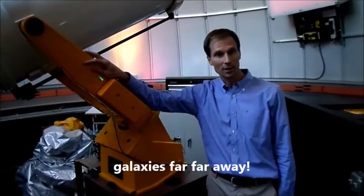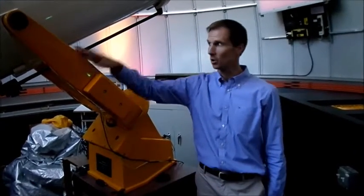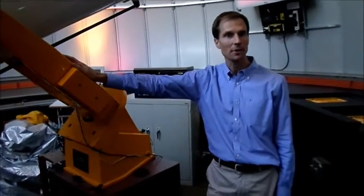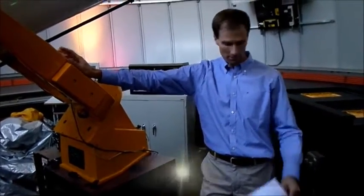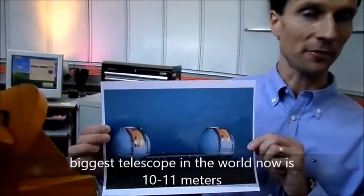How do we build a large telescope that allows us to see these extremely faint objects? This is a 16 inch telescope. The biggest telescope that we build on Earth right now is about 10 or 11 meters. Here's actually a picture of the famous Keck telescope on top of Hawaii.